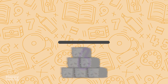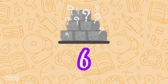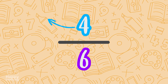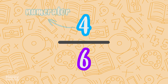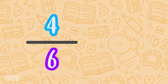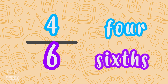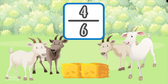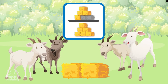Now we will see how many of these six parts the goats have eaten — four! They're so greedy. We put that four at the top, in the numerator. So we have a fraction of four sixths. The goats have eaten four sixths of the straw, because they ate four parts of the six into which we had divided it.